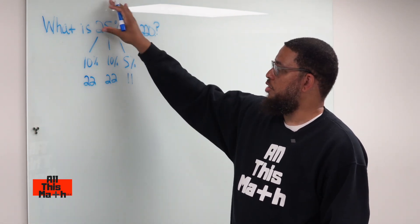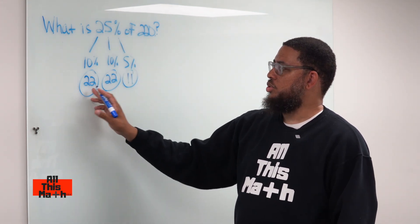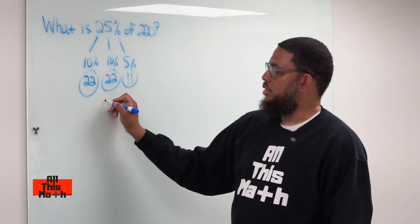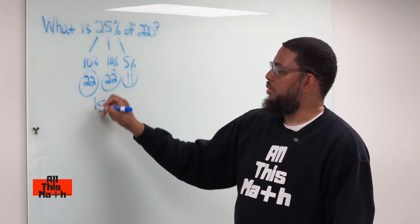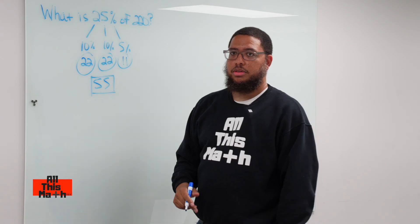So that means that 25% is the sum of these three numbers. So 22 plus 22 is 44, 44 plus 11 is 55. So that means that 25% of 220 is 55. And that's today's lesson.